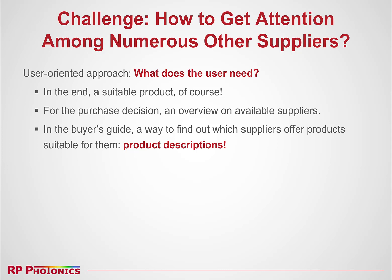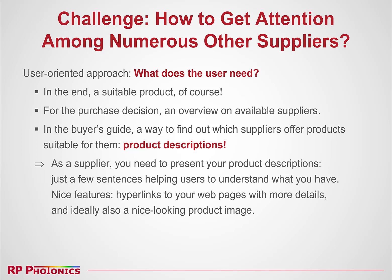In the end, the user needs a suitable product of course. But for the purchase decision, first of all the user needs to get an overview of available suppliers — and this is what a good buyer's guide can provide. You can't buy a laser product for 50,000 dollars and tell your boss you bought it because it was just the first one you found in a Google search. You need to justify your purchase decision. In the buyer's guide, you also need a way to find out which suppliers to put on your shortlist — which suppliers offer products suitable for you. For that, as a user, you need product descriptions. So as a supplier, you need to present your product descriptions — just a few sentences helping users to understand what you have and whether it fits their needs.